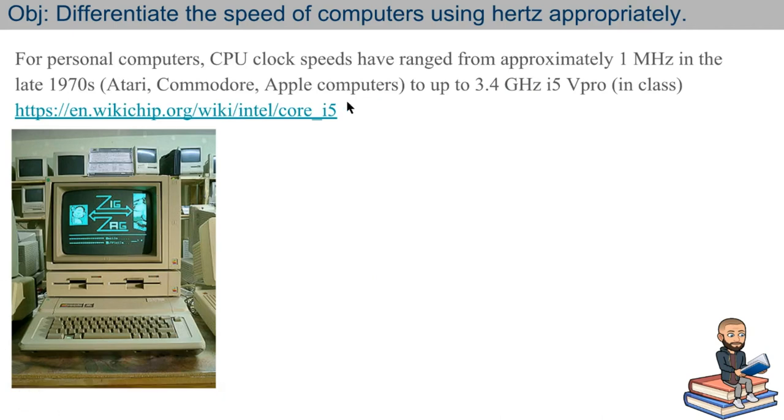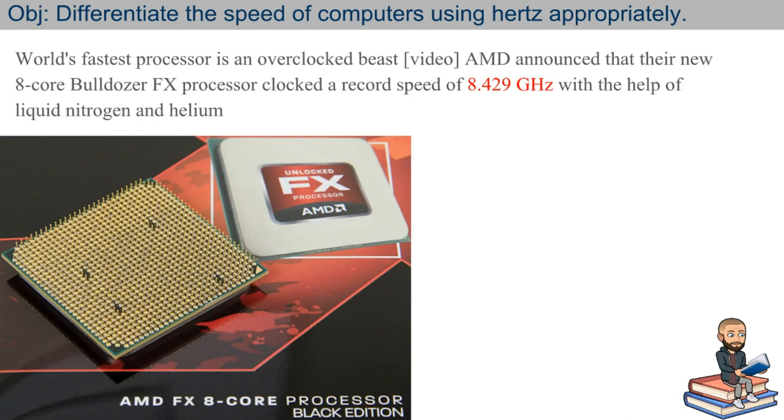And I know I'm showing you an old computer. That's because CPU clock speeds have ranged from 1 MHz back in the 1970s time. We're talking about such computers as Atari, Commodore, the Apple II is a famous one. And nowadays, my students are using a 3.4 GHz, specifically an i5v Pro chip. These are the big, wide, gray screens in my classroom. Good students always want to know the limitations that they can push. At the time of this video, the world's fastest processor is an 8-core Bulldozer FX AMD chip. You can watch a video of this thing in action. It's not a very exciting video, but if you like to nerd out like me, you're going to see a speed of 8.4. And this is actually being done with the help of some liquid nitrogen and helium to cool down the chip before it melts and catches on fire.